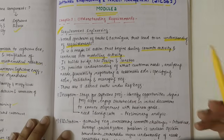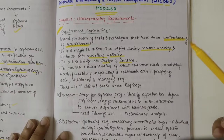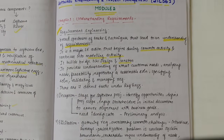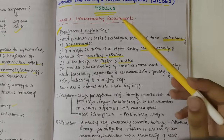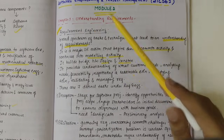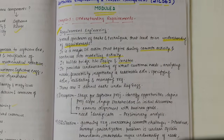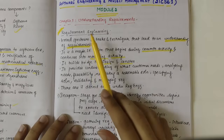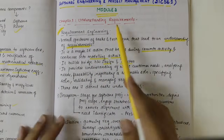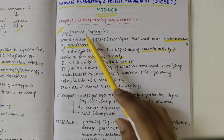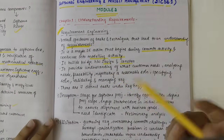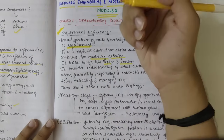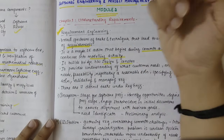In this video, we'll be looking into the important topics and questions which have appeared in the sample paper internals from the second module of Software Engineering and Project Management subject. Starting with the first chapter, Understanding Requirements, we have the first topic: Requirement Engineering. This is a short question that could be asked for 8 or 10 marks.